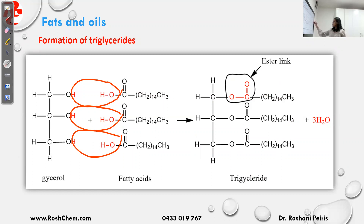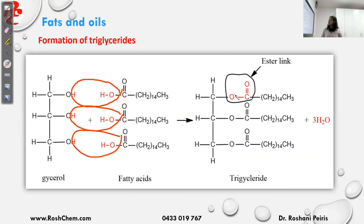The new functional group formed in the triglyceride is COO, which is the ester linkage. So fats and oils contain ester linkages, just like proteins contain amide peptide linkages.